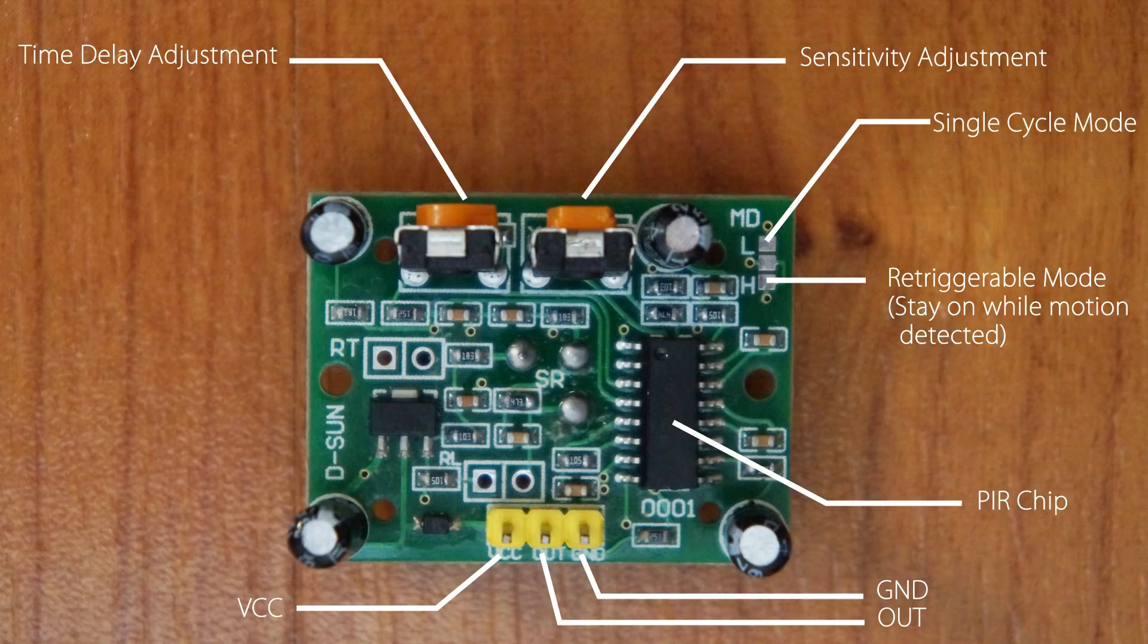Next we have the time delay adjustment. This knob allows you to adjust the time delay between five seconds up to five minutes. Turning the knob counterclockwise decreases the time delay while clockwise increases the time delay up to five minutes.